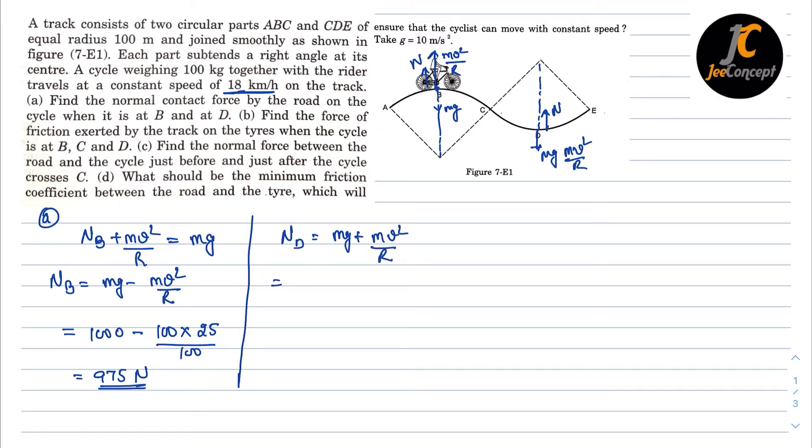Now if we put the values M is 100 into G is 10, so that means 1000 plus M is 100 into V is again 5 meter per second. So that means 5 square is 25 upon R is 100. So that means it will become 1025 newton. So this is the solution for part A.